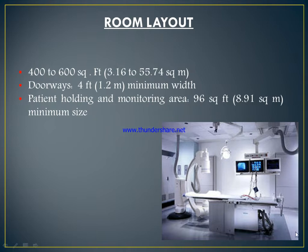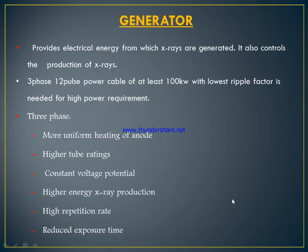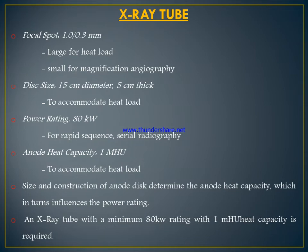A generator is also used in the angiographic room for generating electrical energy for the X-ray tube. It controls the production of X-rays. Three-phase or 12-pulse power cable is used, with at least 100 kV and the lowest ripple factor needed for high power requirements. Three-phase generators provide more uniform heating of the anode, higher tube rating, constant voltage potential, higher energy X-ray production, high repetition rate, and reduced exposure time.